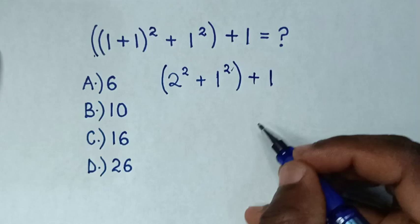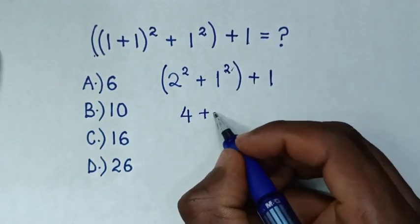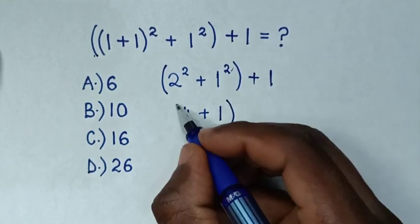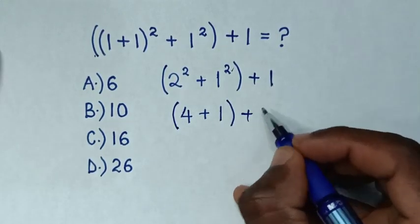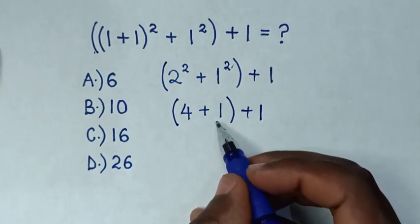Then, 2 squared is 4, plus 1 squared is 1, in brackets, plus 1. Then 4 plus 1 is 5.